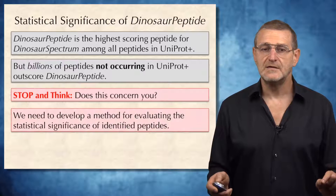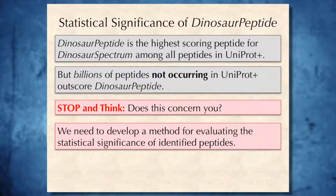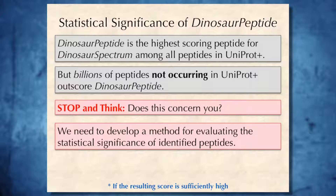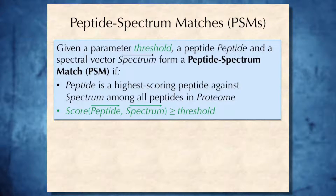Does this concern you? It looks like we need to develop a method for evaluating the statistical significance of an identified peptide. To help us with evaluating the statistical significance of the dinosaur peptide, we need to recall the small print. The match between a peptide and a spectrum was considered significant if the resulting score is sufficiently high. Therefore, we define the notion of a peptide-spectrum match as follows. Given a parameter threshold, a peptide and a spectral vector form a peptide-spectrum match, abbreviated as PSM, if the peptide is the highest-scoring peptide against the spectrum among all peptides in the proteome.